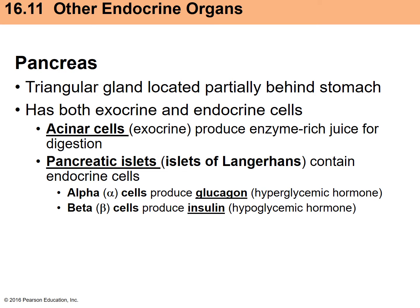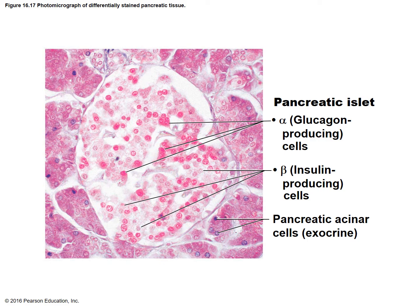The pancreas is located behind and underneath the stomach. It has both exocrine and endocrine cells. The exocrine acinar cells produce pancreatic juice that aids digestion, released into the small intestines. The endocrine portion contains the pancreatic islets, or islets of Langerhans, subdivided into alpha cells producing glucagon and beta cells producing insulin. In the histology slide, alpha cells appear smaller and reddish or dark pink, while beta cells tend to be paler and more purplish.